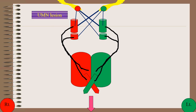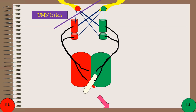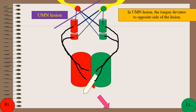Suppose there is an upper motor neuron lesion involving the right-sided corticolingual fibers. There will be sparing of all intrinsic and extrinsic muscles of the tongue except the left genioglossus muscle, because of primarily crossed innervation. The right genioglossus muscle will be normal, hence it will lead to deviation of the tongue towards the left side. Therefore, in upper motor neuron lesions, the tongue deviates to the opposite side of the lesion.